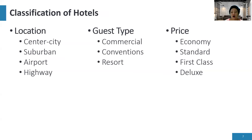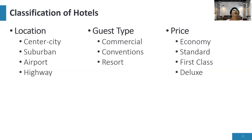For location, we have center city hotels — obviously found inside the city. We have suburban hotels, between rural and urban areas. We have airport hotels, located near the airport, such as the Orange Group Hotel in Davao and Airport View Hotel in Buhangin.